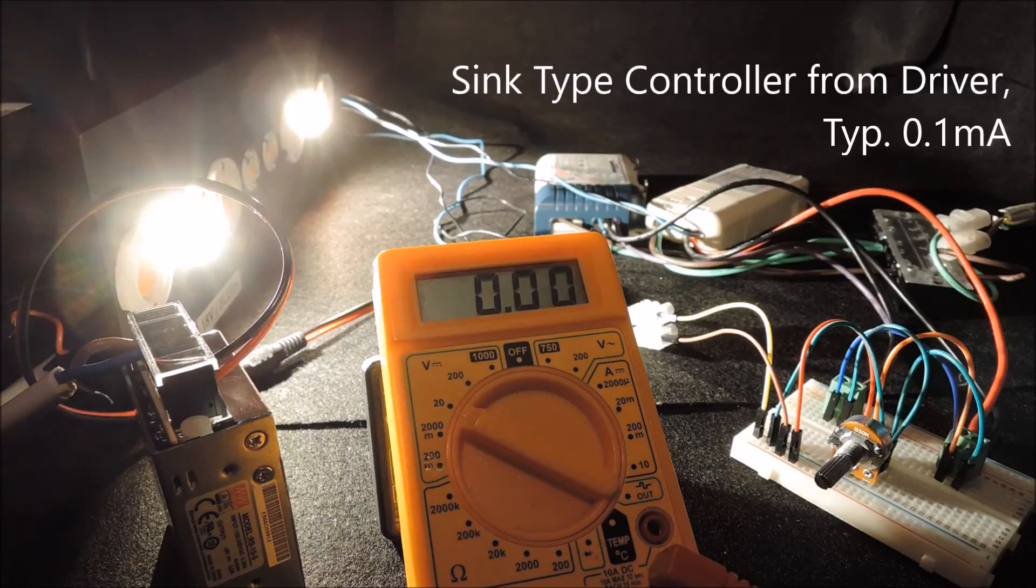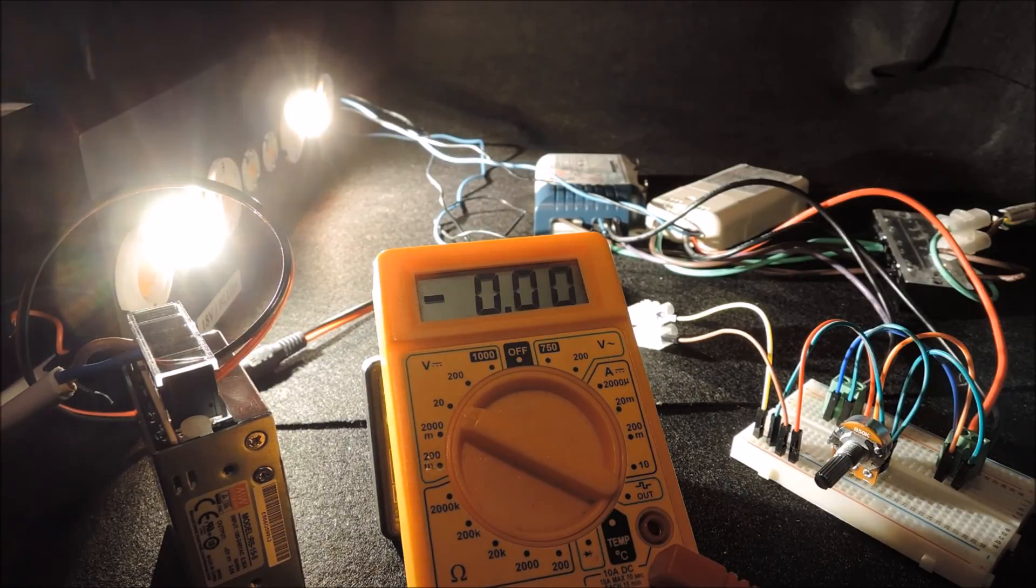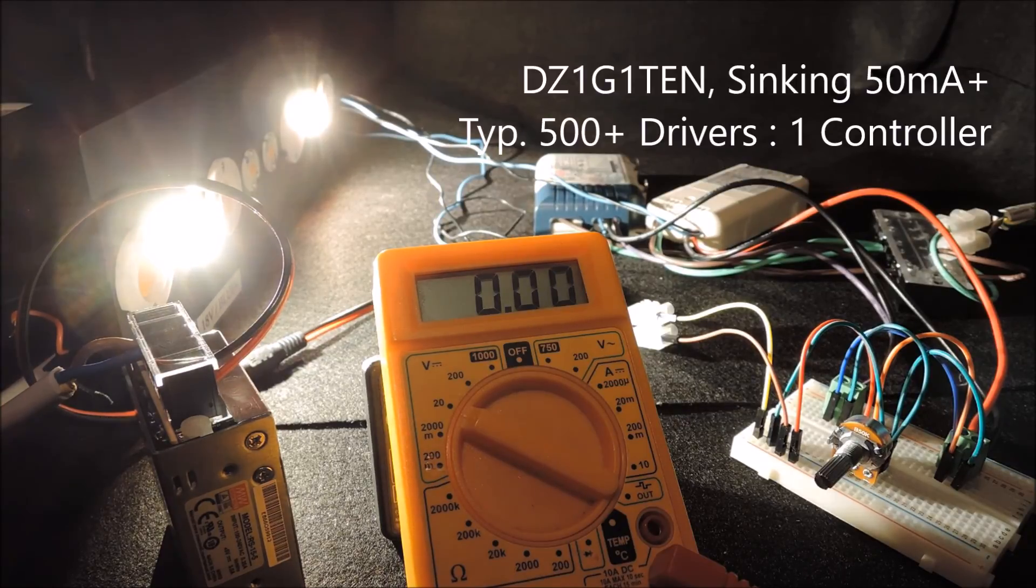A sink type device sinks a very small current from the driver, approximately in the magnitude of 0.1mA. For DZ1G1TEN, our device is capable of sinking 50mA or more, which means 500 plus drivers can be connected simultaneously to a single controller.